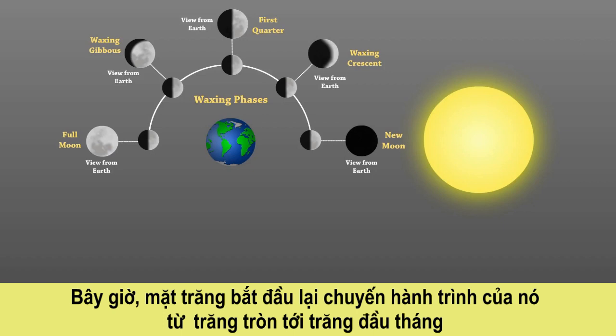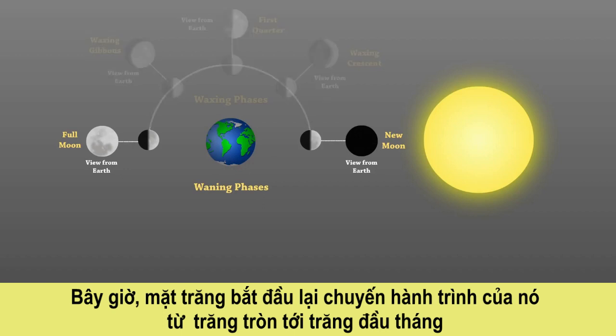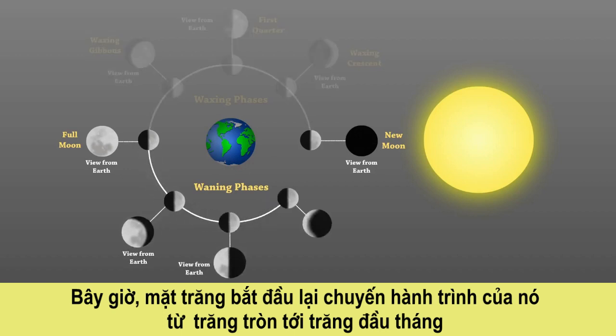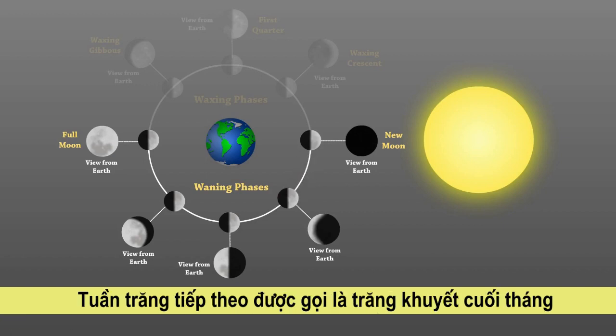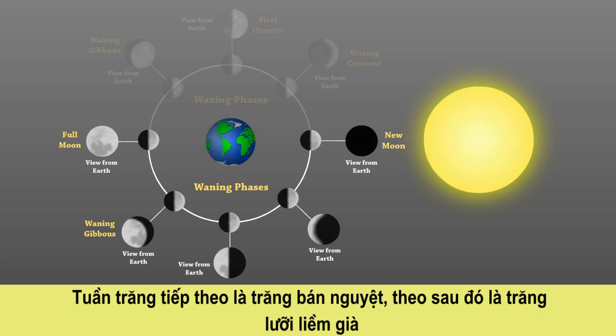The moon begins its return journey from the full moon to the new moon. The next phase is called the waning gibbous. The next phase is the last quarter, followed by the waning crescent.